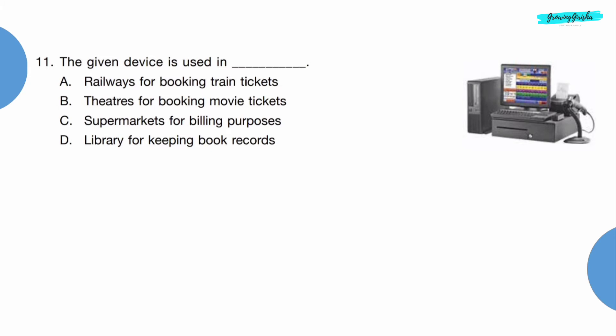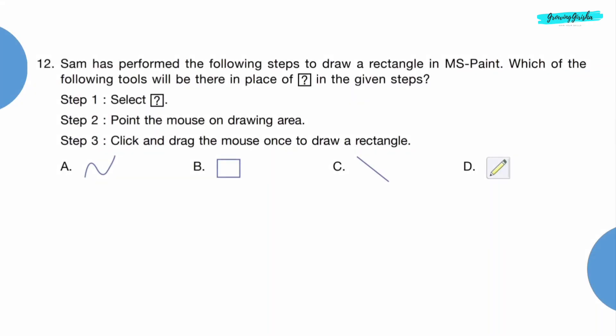Question 11: The given device is used in dash. We can see a barcode scanner and bill printer in the picture, which is found in supermarkets. So option C is the correct answer.